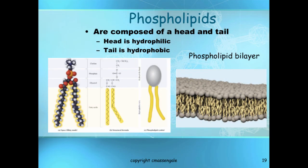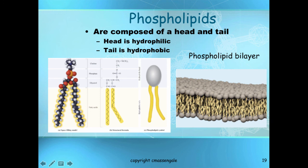Let's look at a phospholipid. A phospholipid, similar to a triglyceride, has a head — which is the phosphate, glycerol, and combined area — and tails, which are the hydrophobic fatty acids that hate water. The head is hydrophilic, meaning it loves water. In a cell membrane, which is a phospholipid bilayer, they create a sandwich structure. Water can flow around, and the hydrophilic heads are fine with that, while the tails that repel water are protected in the middle. Here is a 3D model — notice one tail is unsaturated with that bend, and one is a straight saturated fatty acid.